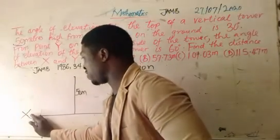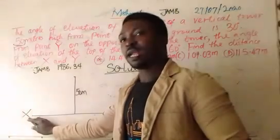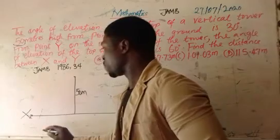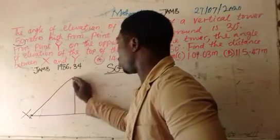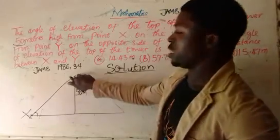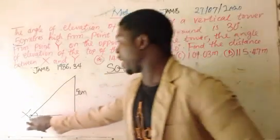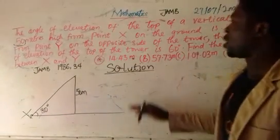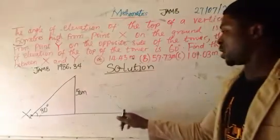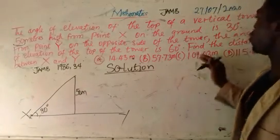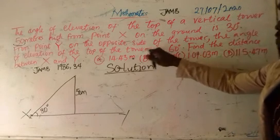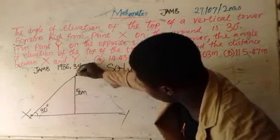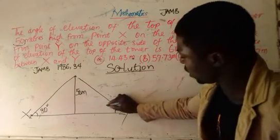If we assume the observer is at point X, then the horizontal eye level is here. The angle between the horizontal eye level and the top of the tower is the angle of elevation from X, which is 30 degrees. At point Y on the opposite side of the tower, the angle of elevation is 60 degrees.